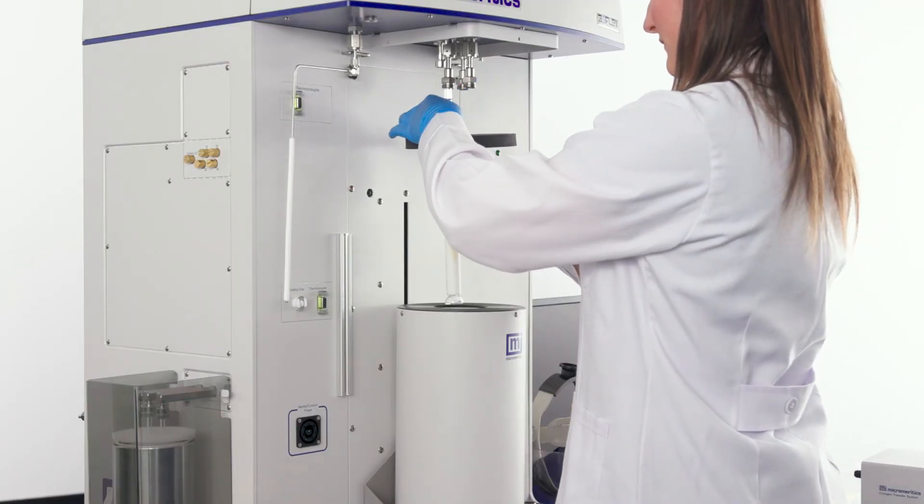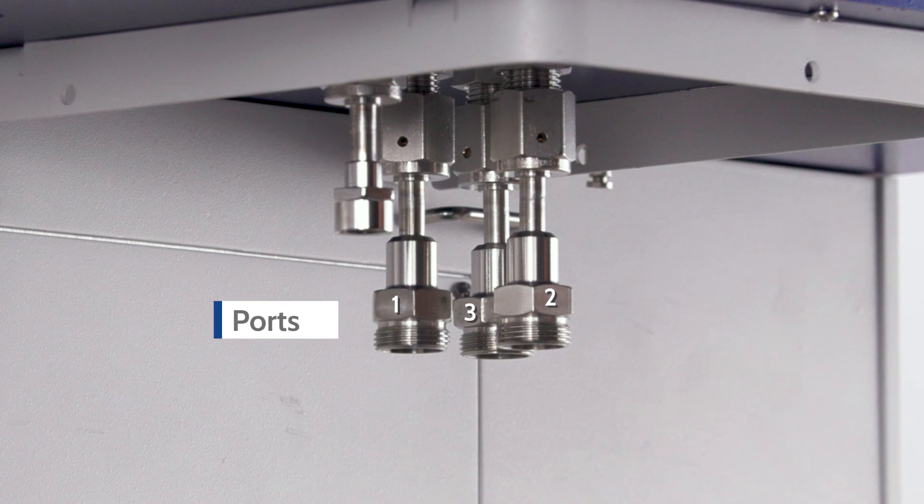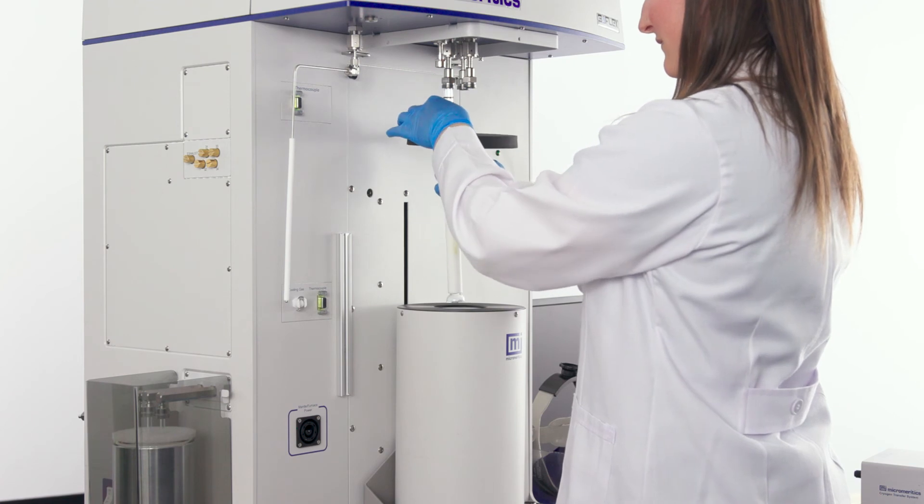Install the sample tube on an appropriate sample port from left to right. The sample ports are labeled as one, two, three. Tighten the nut until it is finger tight.